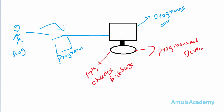To give instructions we need to communicate with computers, and for that we need a language. For example, if you want to communicate with your friends or other people, you need a language. In the same way, to give instructions or to communicate with computers we need a language, and this is called a programming language because these languages are used to write programs.